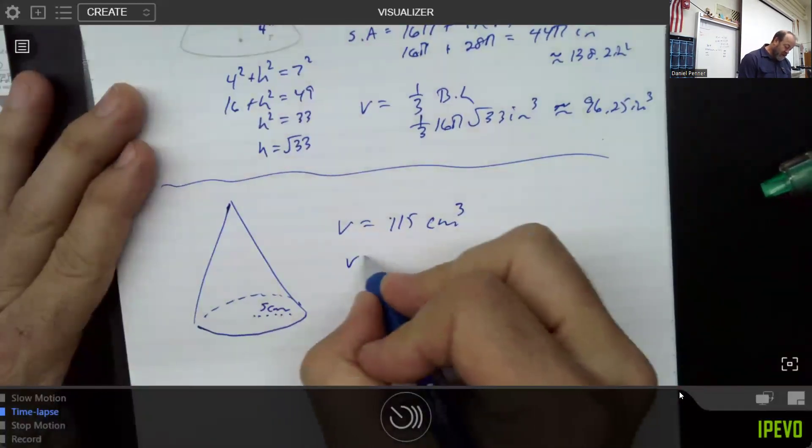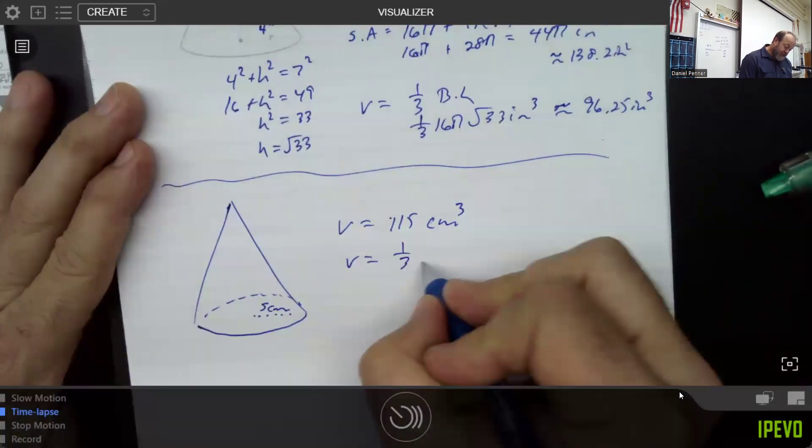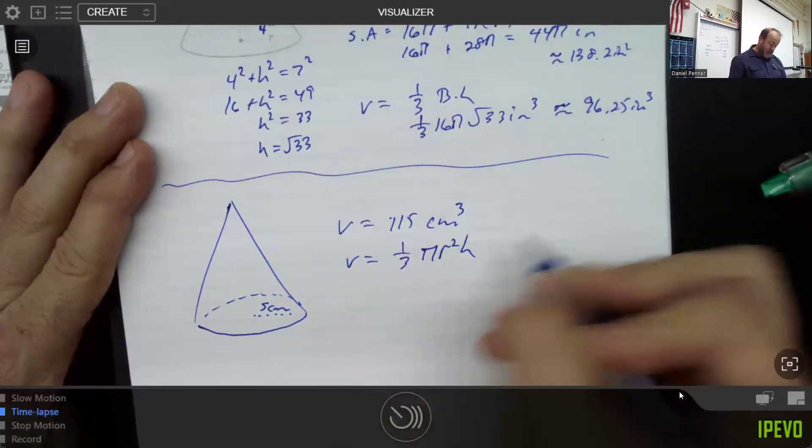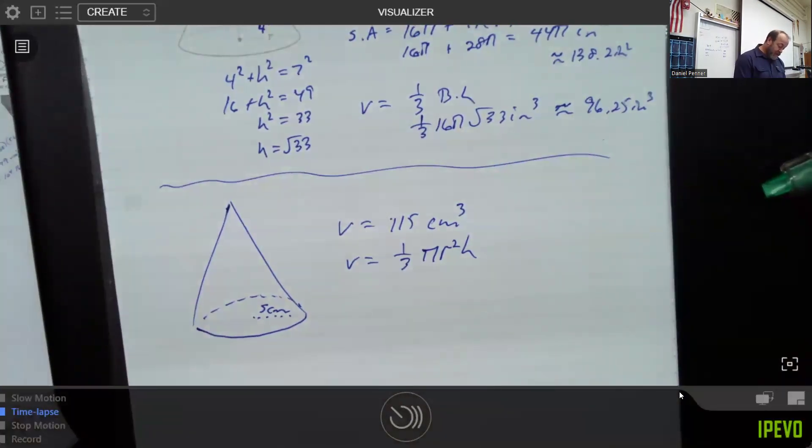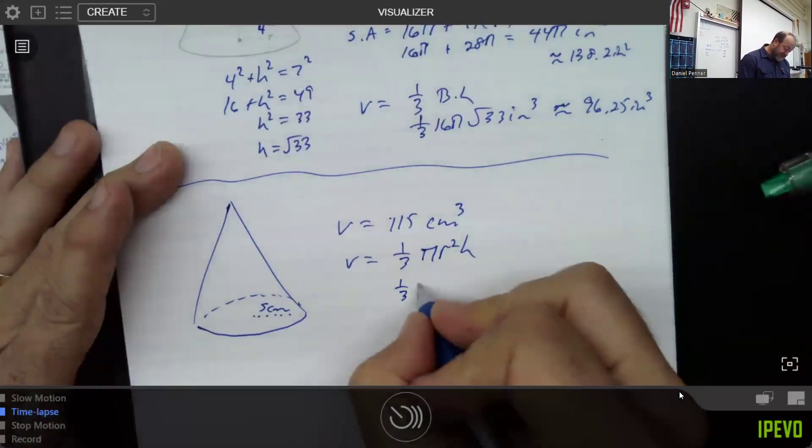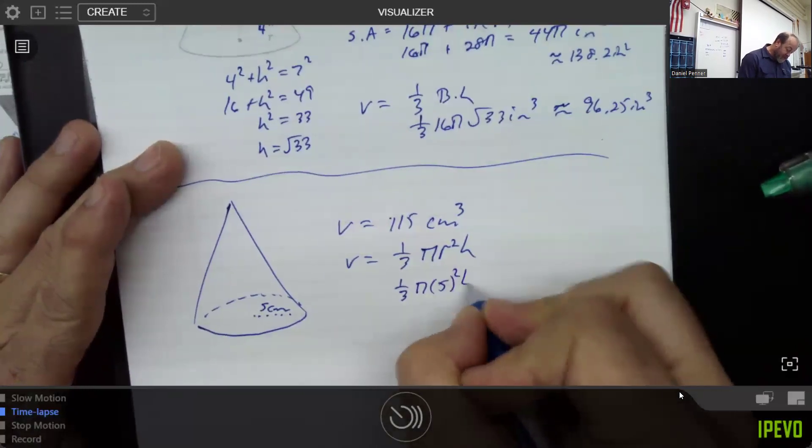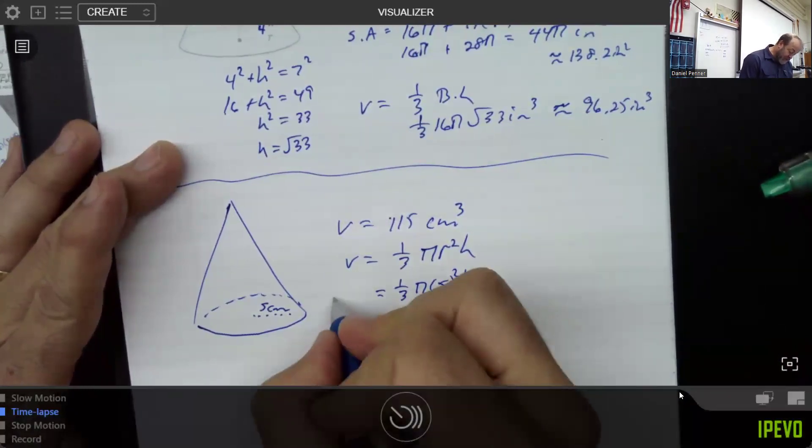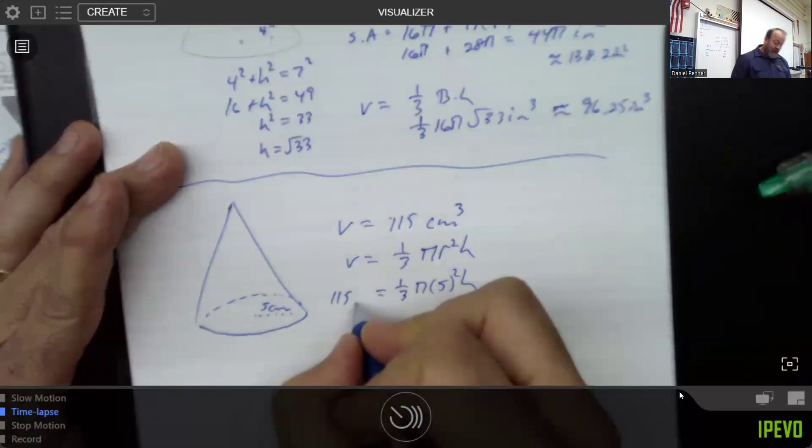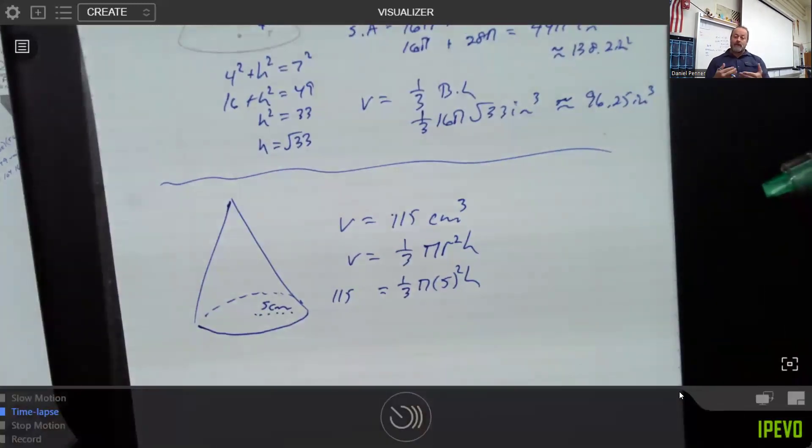So what I like to do is I just have to trust what I know. The volume should be one third pi r squared h. Now, I did give you the radius, which is nice. And I also gave you the volume, which is 115. And that means I could actually peel my way backwards and find the height.